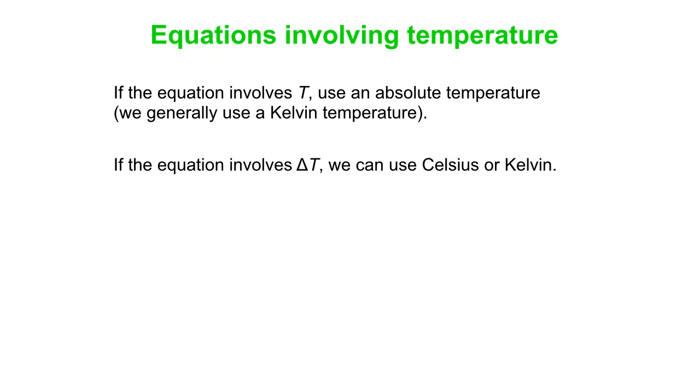On the other hand, if the equation involves delta T, it doesn't matter whether you use Celsius or Kelvin, right? A change by 5 degrees Celsius is the same as a change by 5 degrees Kelvin. So delta T, you can use either one, but if it's just a T, you've got to be on the Kelvin scale, or at least an absolute temperature scale.